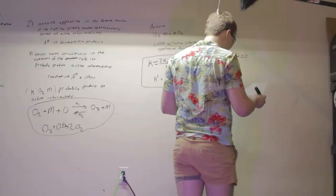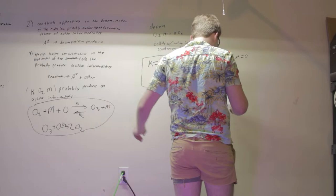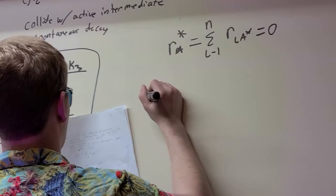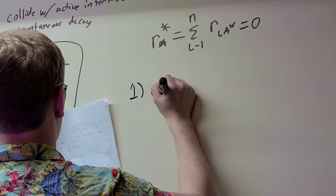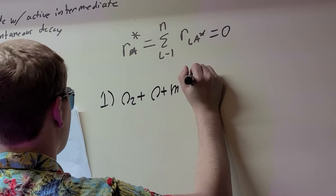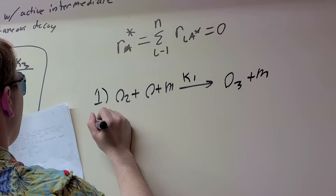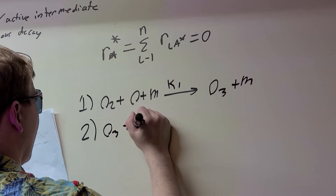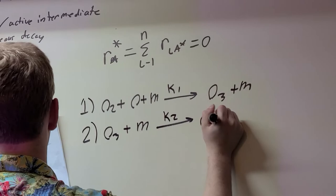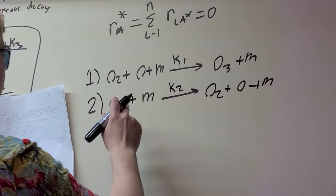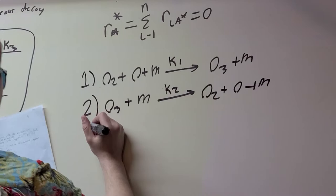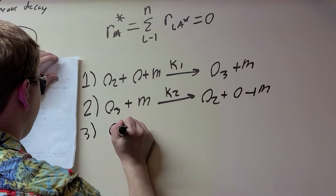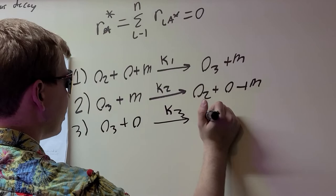So, since we already had the stated mechanisms, we're going to write them in a slightly different interpretation. We're going to have the first one, the O2 plus O plus M going to K1 and O3 plus M. Then we'll have our second being O3 plus M going to K2, O2 plus O plus M. As you can see, these are the same, just split up. And then finally, we have O3 plus O, K3 goes to 2 O2.